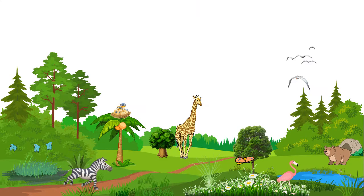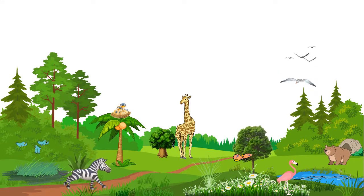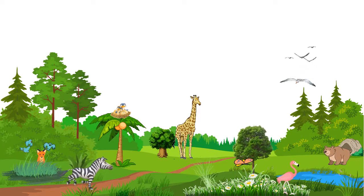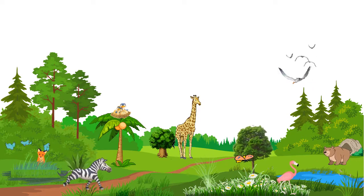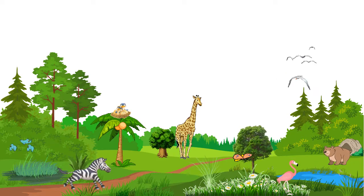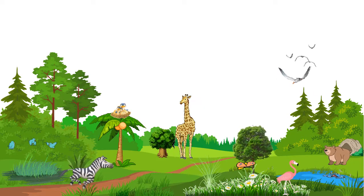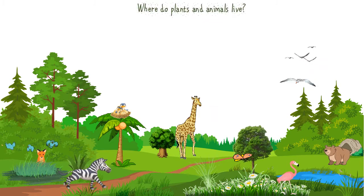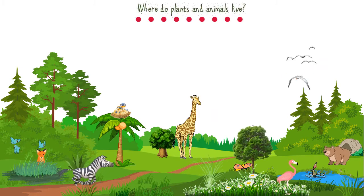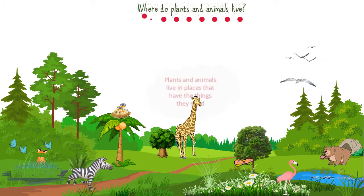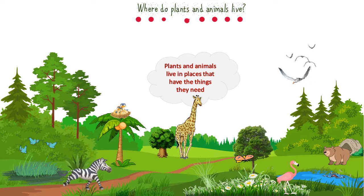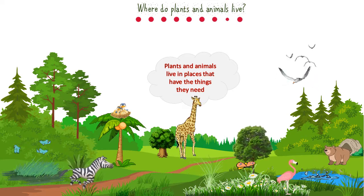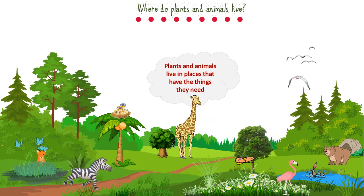Have you ever wondered before where do plants and animals live? We have so many kinds of plants and animals in this world, and these plants and animals can't survive in the same places. Plants and animals live in places that have the things they need.